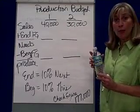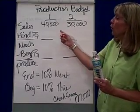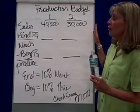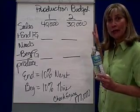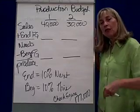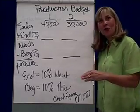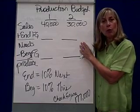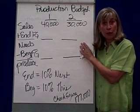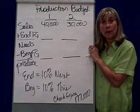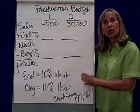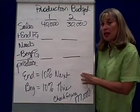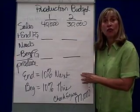From the previous sales budget, we're going to sell 40,000 bottles of water in the first quarter and 30,000 bottles of water in the second. Because we like to keep our shelves full of bottles of water, we also need to consider what we want on the shelf at the end of the period — in other words, what's our ending finished goods. We've made an assumption that ending finished goods is equal to 10% of the next quarter's sales.